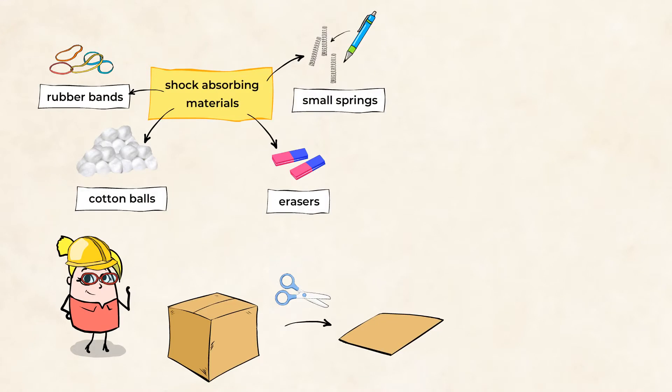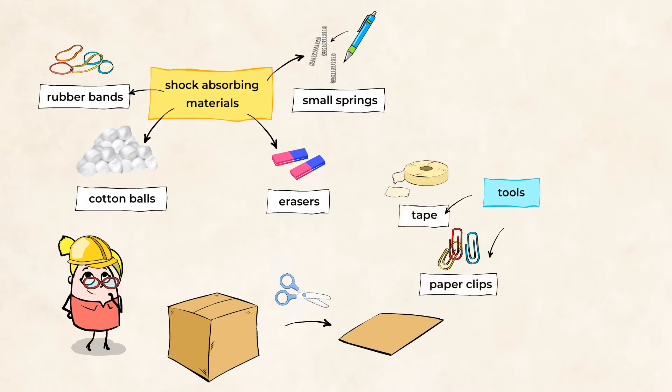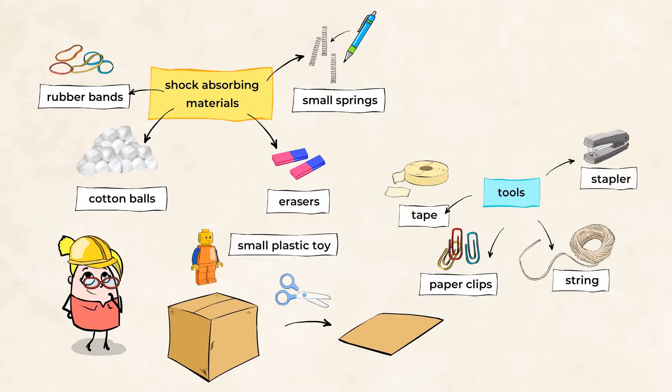We'll also need some tools to attach the shock absorbers to the building, like some tape, paper clips, string, and a stapler. Finally, we'll need a small plastic toy like a Lego figure to put on top of the box that represents our building.